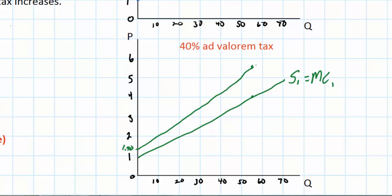what we can see is that the slope or the gradient of the supply curve actually increases when there is an ad valorem tax placed on the good. So we have a new supply curve, S2 marginal cost 2, with the tax.